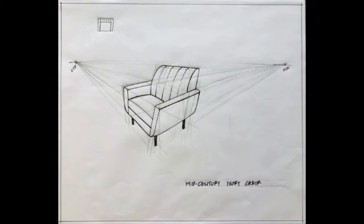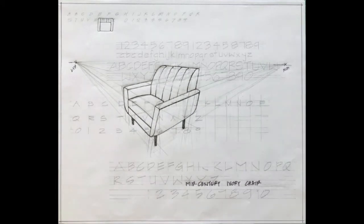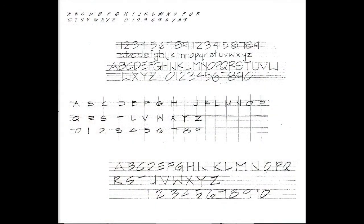Down below, she has her mid-century ivory chair listed again, and she wrote that using architectural lettering. You'll find this in Slate Content as well.